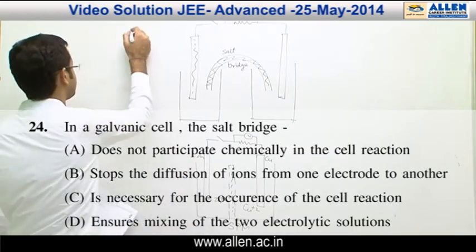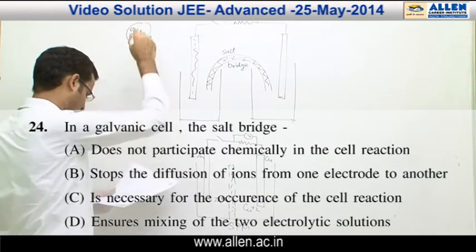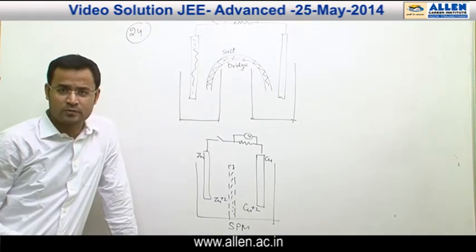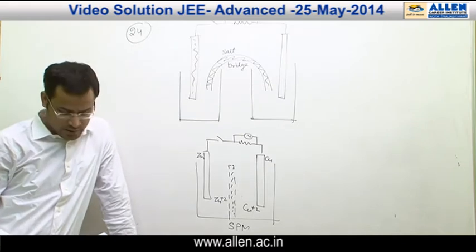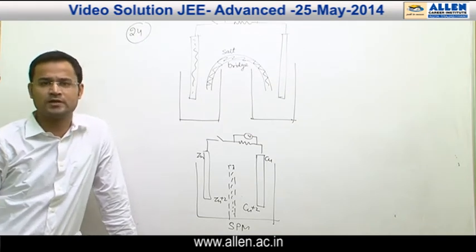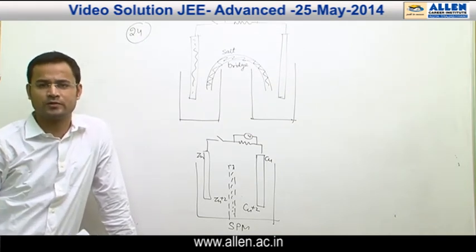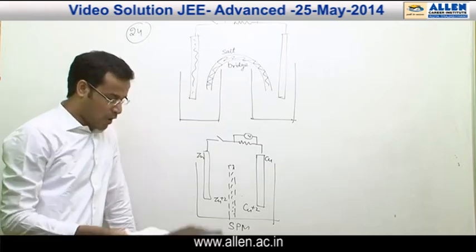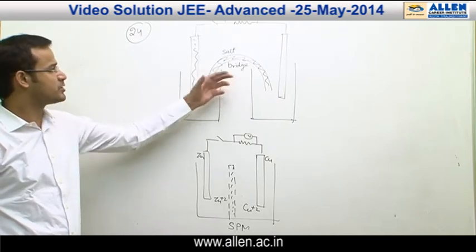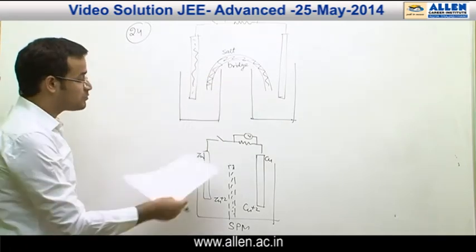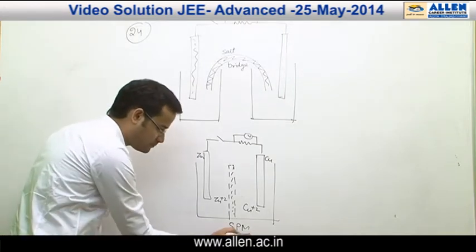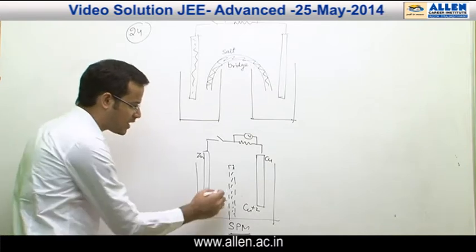Question number 24: In a salt bridge, the salt used is inert in nature, therefore option A is correct. Salt bridges do not participate in the chemical reaction of the cell. For option B, if we do not use salt bridges, instead we use a semi-permeable membrane, but if we use that, these ions move from anode to cathode or cathode to anode to maintain electrical neutrality.